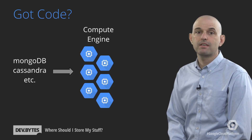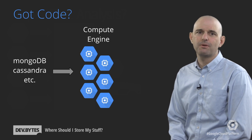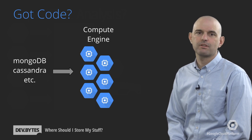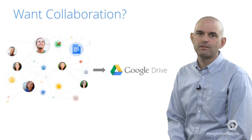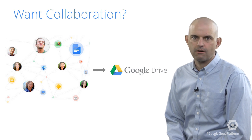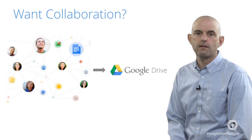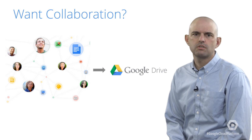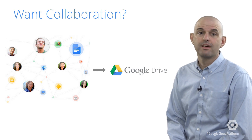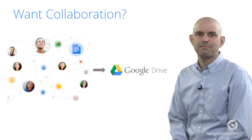Maybe you're already using a storage solution you're happy with. In that case, it'll run great on Compute Engine and can store its data on persistent disk. If you want to build an app that interacts with user data stored in Google Drive or has awesome collaboration features like you've seen in Google Apps, then you should check out the Google Drive API.